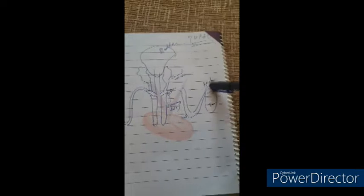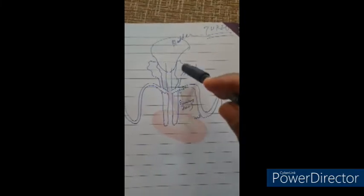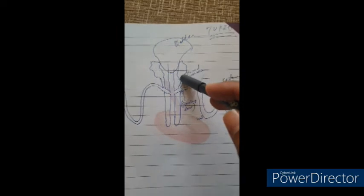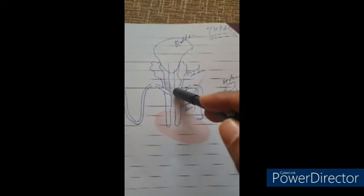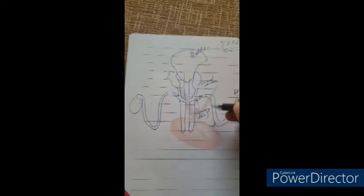After sperm production in the testes, they travel through these tubules. As I said, there could be a block here or here that could be corrected. Then they travel into the ejaculatory duct, and there's a seminal vesicle for the semen, then they come out to the urethra.